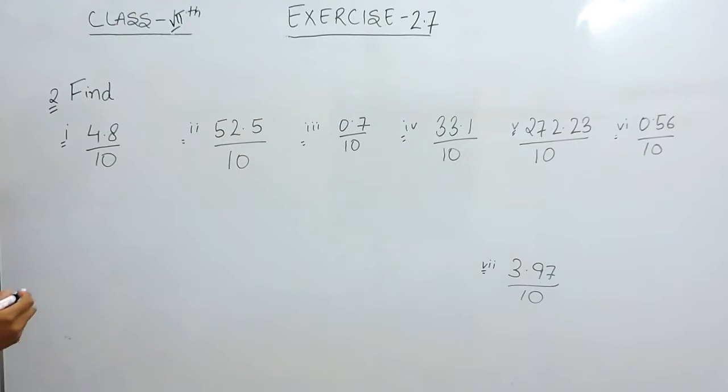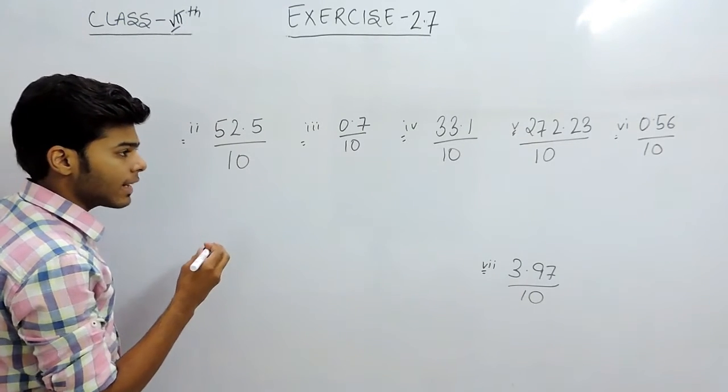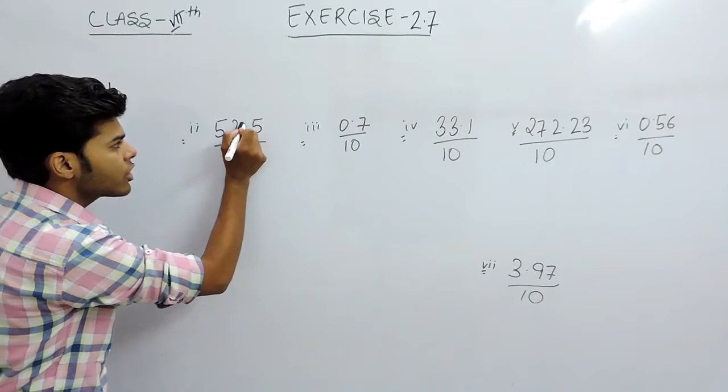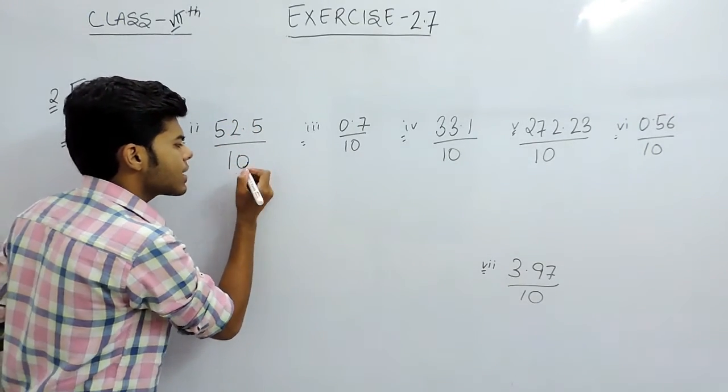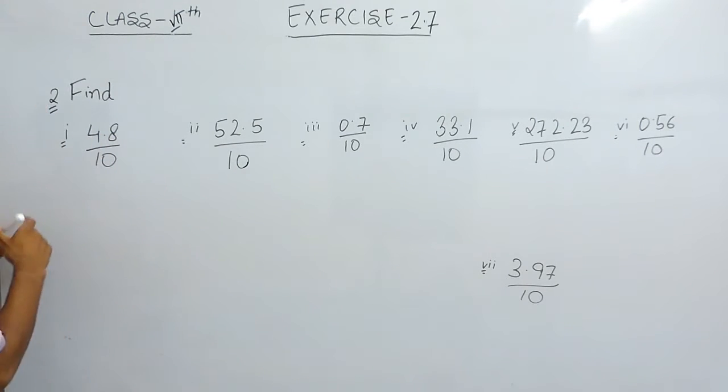So the simplest way that I told you is whenever there are multiples of 10 in the denominator, we shift the decimal points towards the left according to the number of zeros present in the denominator. So there is one 0.